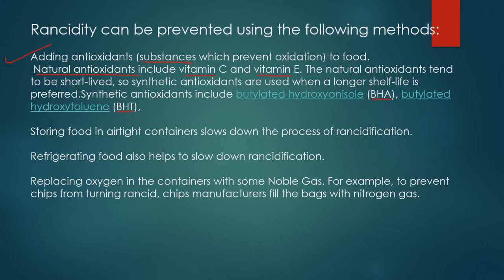Another prevention method is storing food in airtight containers. When the amount of oxygen in contact with food is lower, oxidation is reduced and food does not become rancid. Similarly, we can refrigerate food — refrigeration slows down the rate of oxidation and therefore delays rancidity.